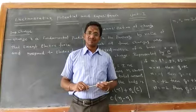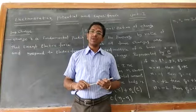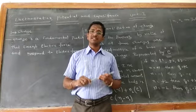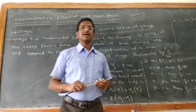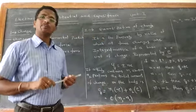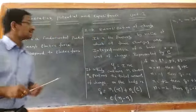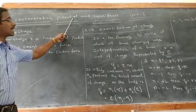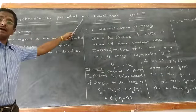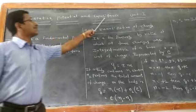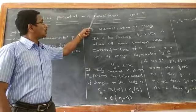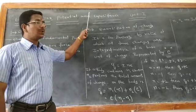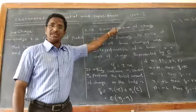Namaskar, this is Dr. Mahesh. Today I would like to explain about the first chapter in the 2nd CBSE, that is Electrostatic Potential and Capacitance. These two units we can call as the first unit.